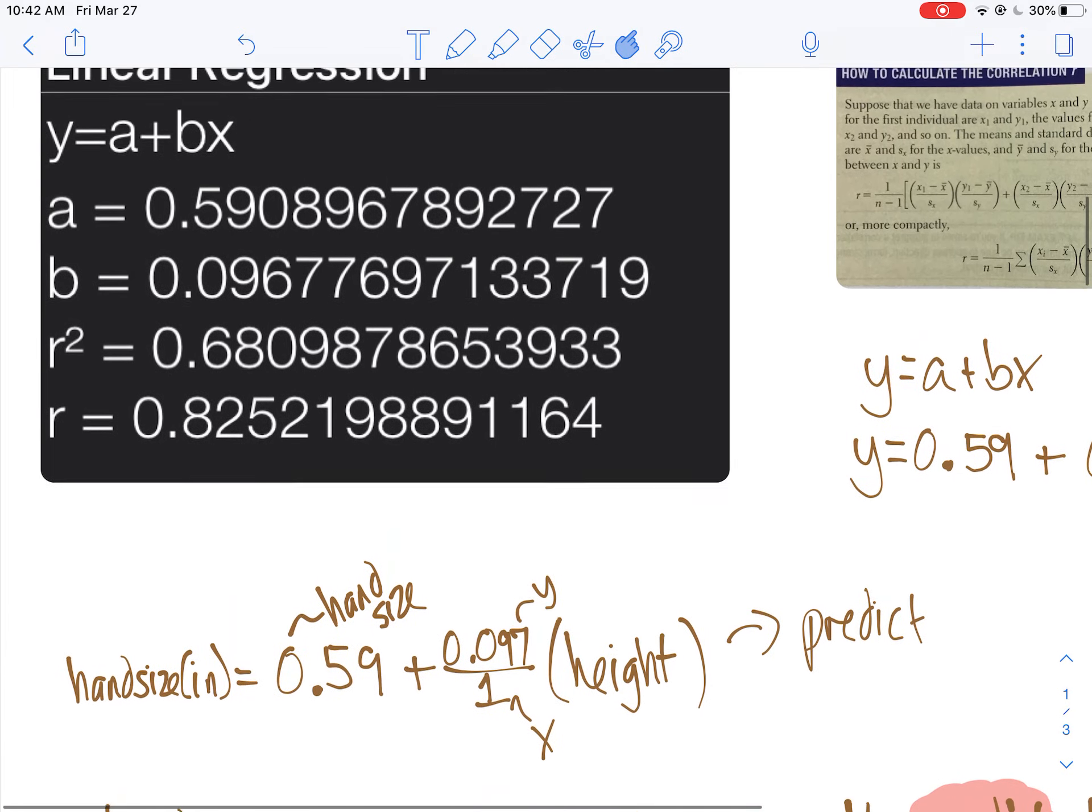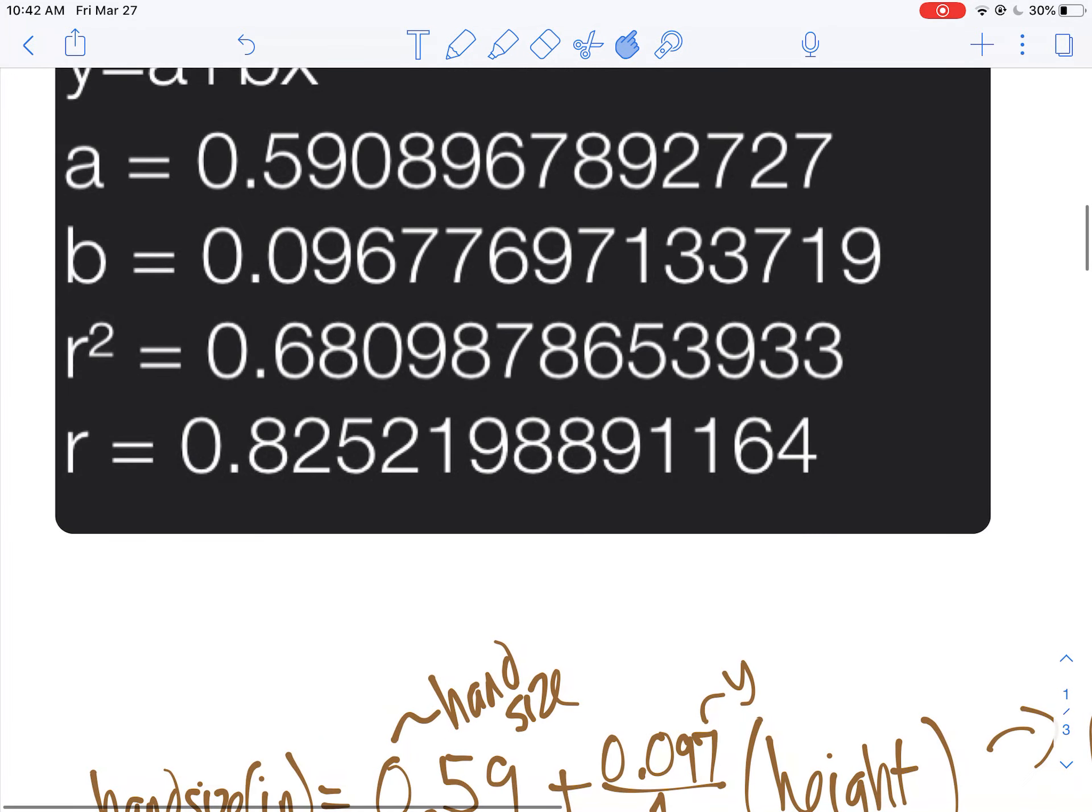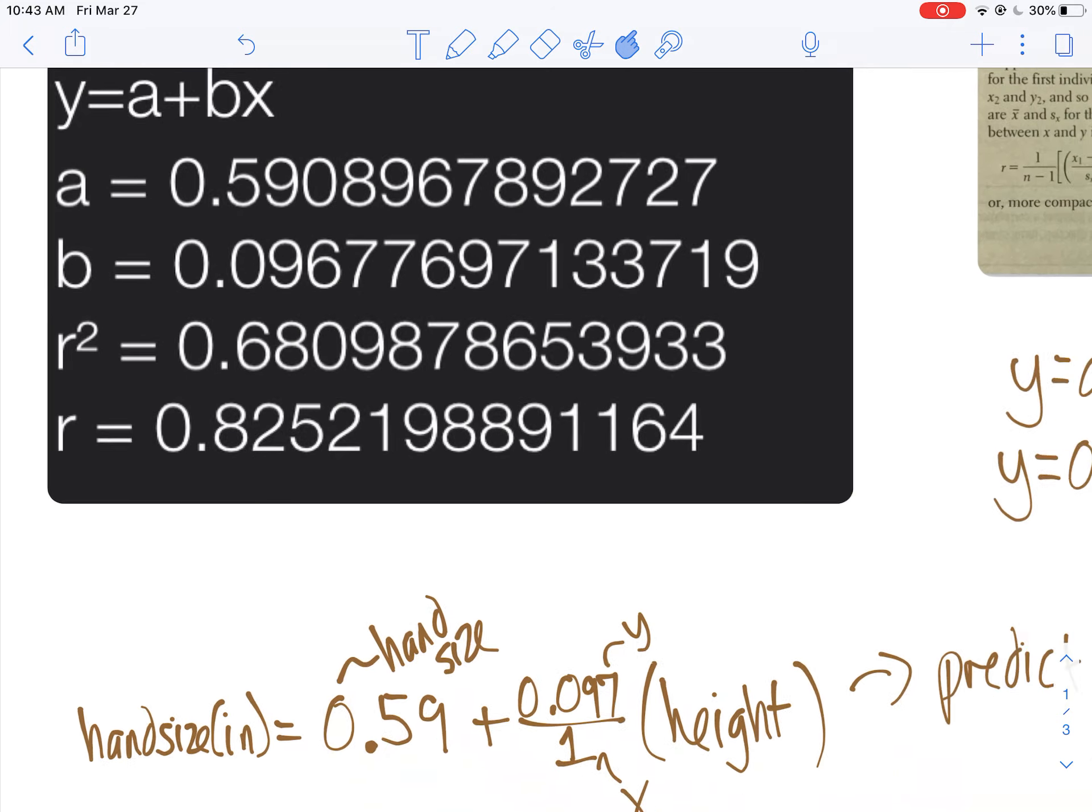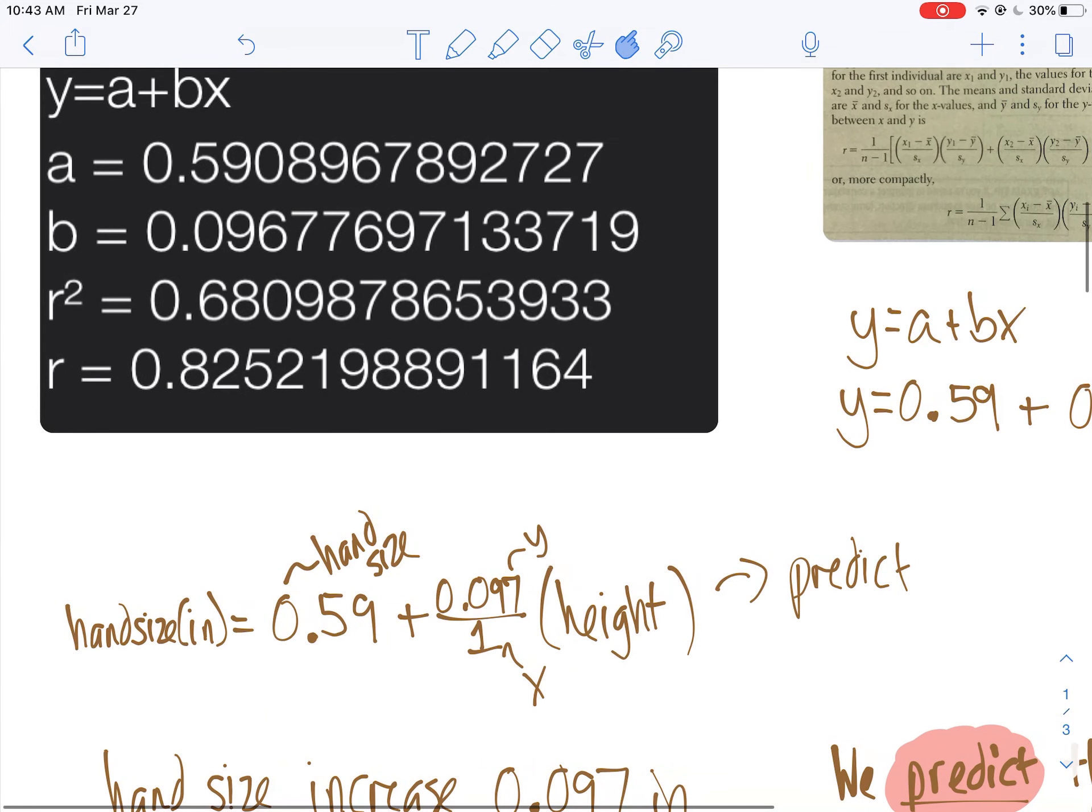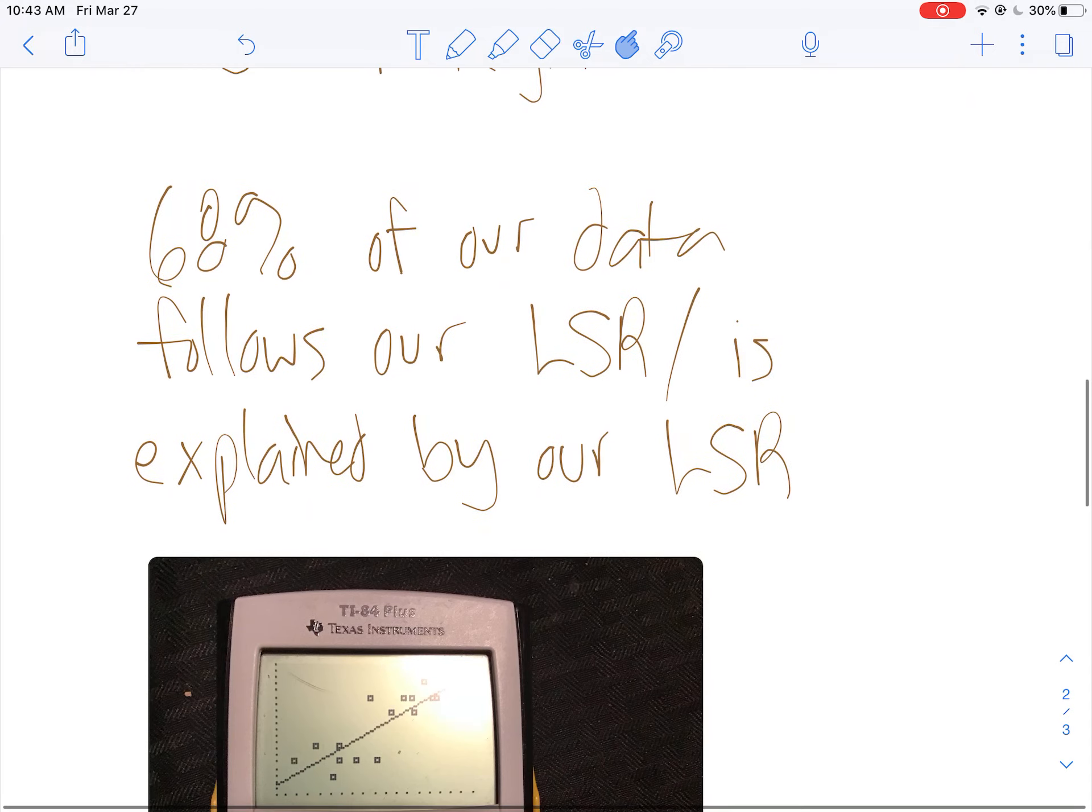Now that 0.68, that R squared, what that tells me is the percentage of values that are accounted for by this least squares regression equation or this line. So I'd say about 68% of our data values can be accounted for by this least squares regression. I believe I wrote that. Yup. 68% of our data follows our least squares regression or is explained by our least squares regression.